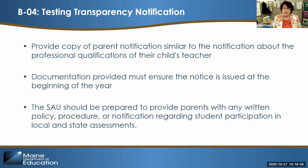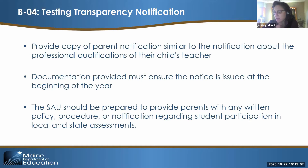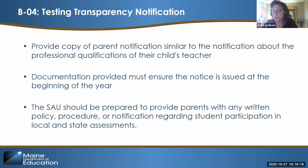Moving on to B4 — this item is really asking for a notification to be provided annually at the beginning of the school year to inform parents that they have the right to request any policies or procedures regarding student participation in local and state assessments, which would also include any opt-out procedures. We're looking for a copy of that initial notification provided to parents. It's very similar to the annual notification indicating parents have the right to request the professional qualifications of their child's teacher. Annually, at the beginning of the year, the notification needs to go out.